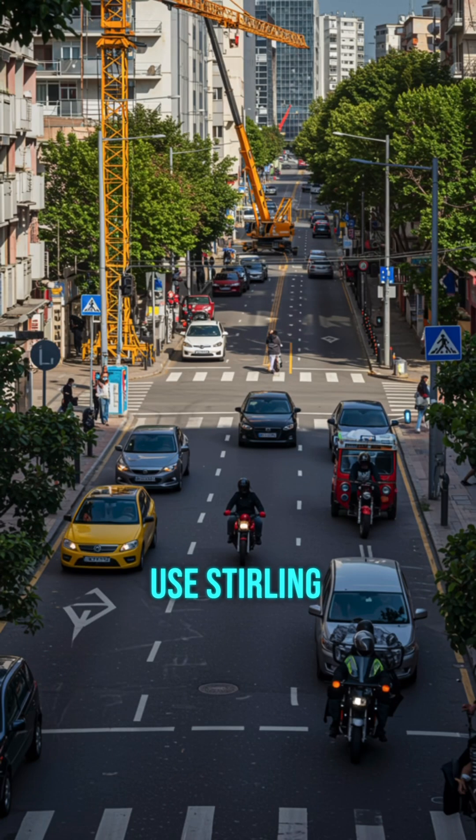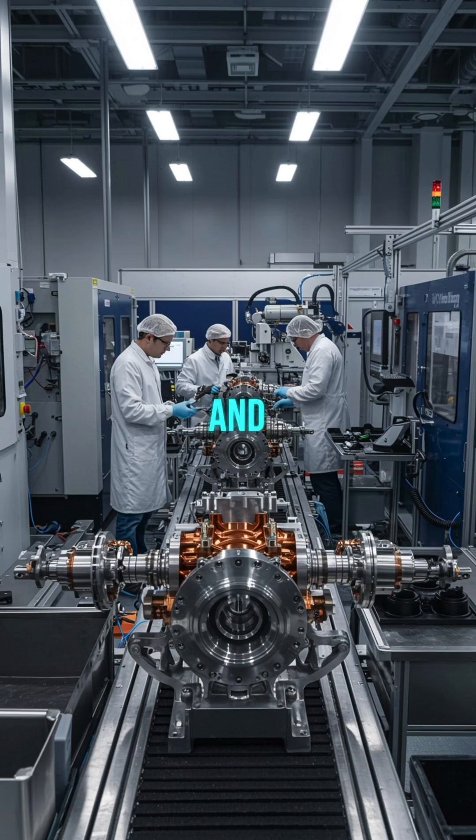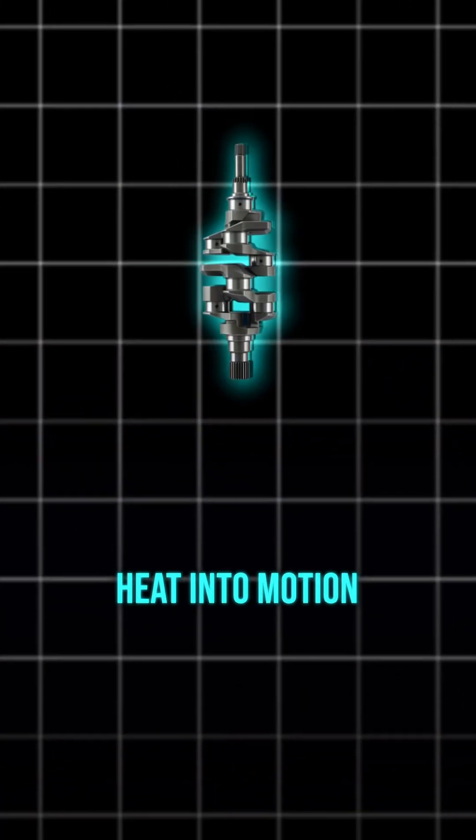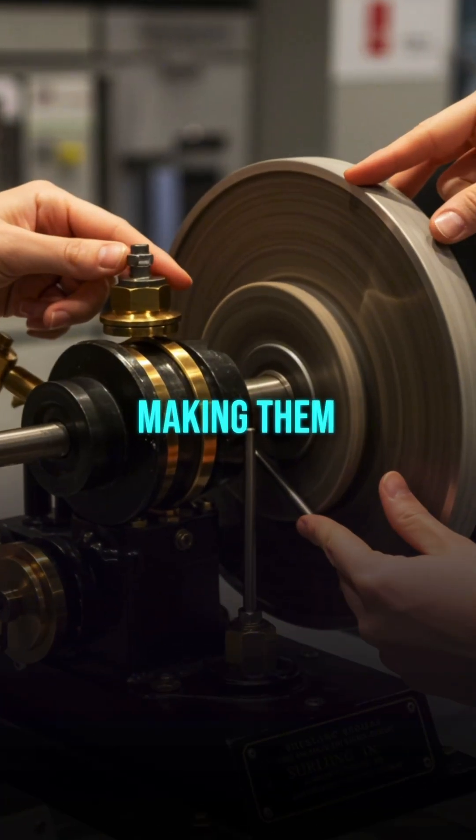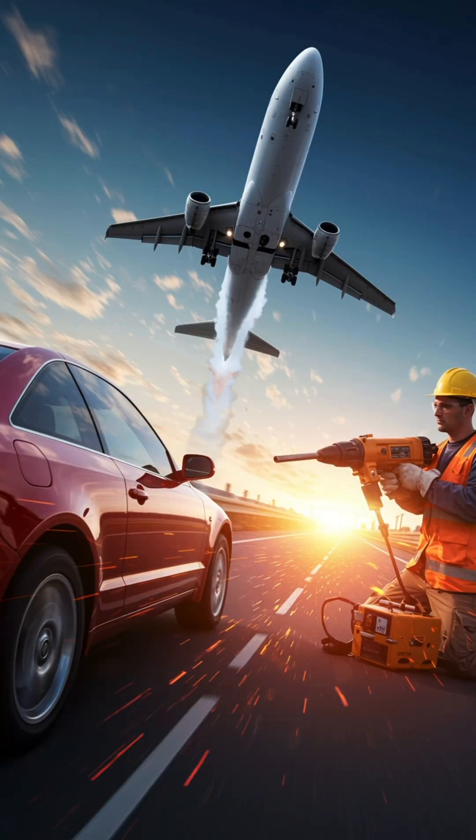So why don't we use Stirling engines everywhere today? The answer lies in their slow response time and high manufacturing cost. They're excellent at turning steady heat into motion, but they can't change power output quickly, making them less practical for cars, planes, or devices that need rapid bursts of energy.